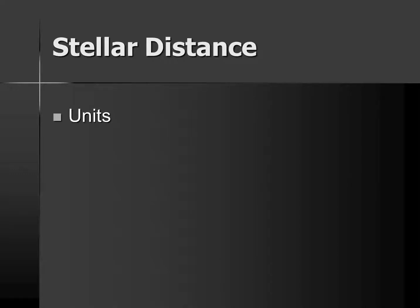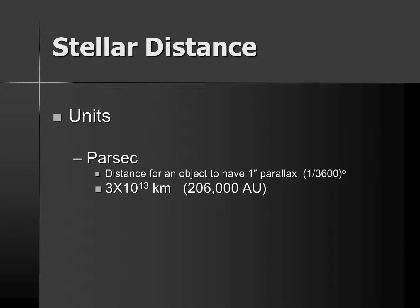As we start talking about the distance to stars, it's important to talk about units. One common unit is something known as a parsec. A parsec is the distance an object would be if it had one second of parallax angle. Remember, a second is 1/60th of a minute, which is 1/60th of a degree, so one second is 1/3,600th of a degree. Another way to think about it: a parsec is 3 times 10 to the 13 kilometers, or 206,000 astronomical units.